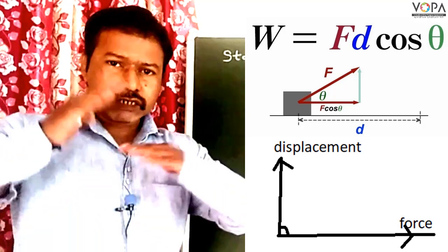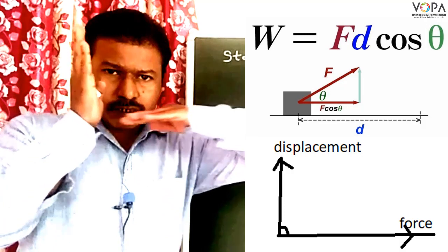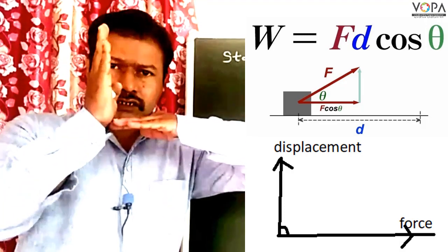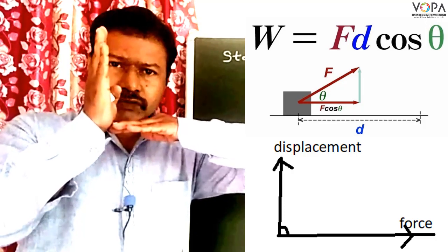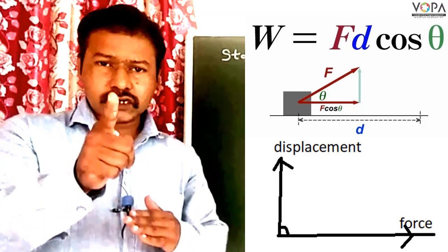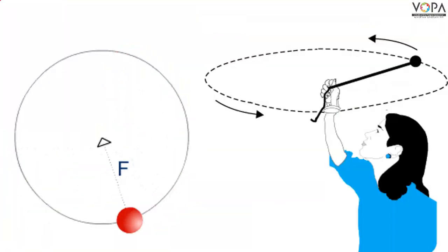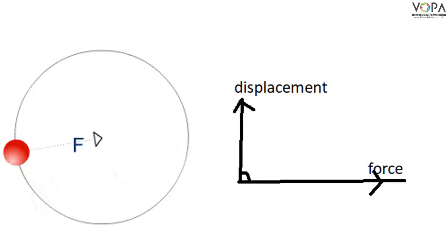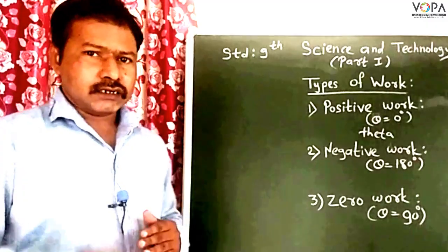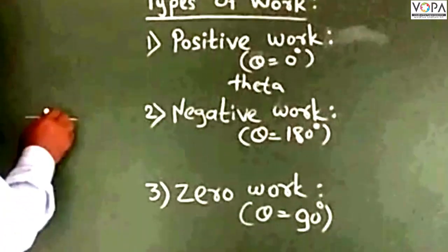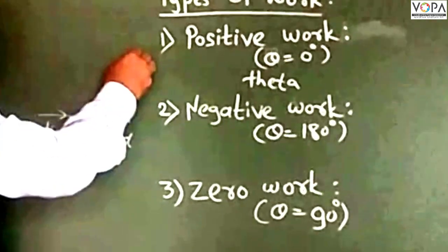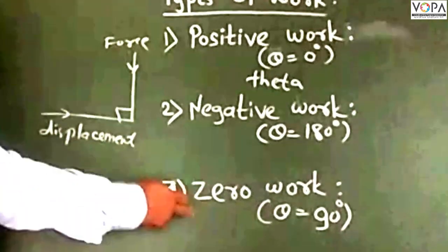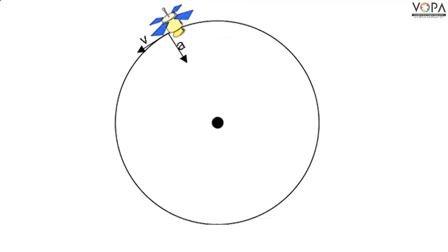When the angle between the force and displacement is 90 degrees, the work is zero. Another example: if you tie a stone to a string and whirl it in a circle, the force and displacement are perpendicular to each other. The angle between them is 90 degrees, so as we can represent graphically, the displacement and the applied force are at 90 degrees — both are perpendicular to each other.